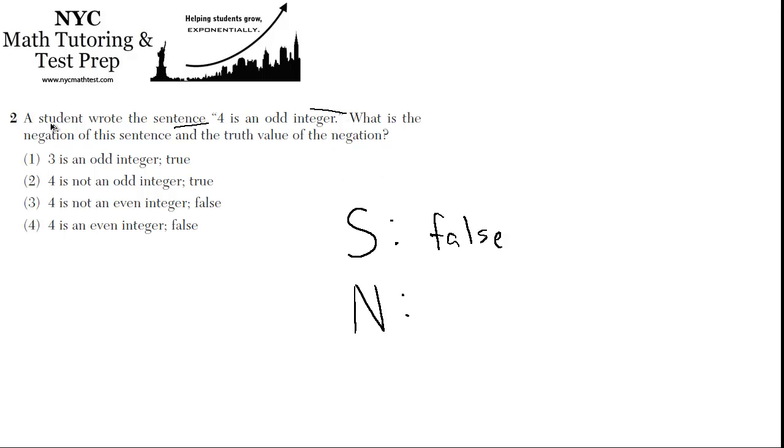So that is choice number 2: 4 is not an odd integer. So actually, even without checking the truth value, we could narrow it down to number 2 right away. But let's just check to see what the truth value is.